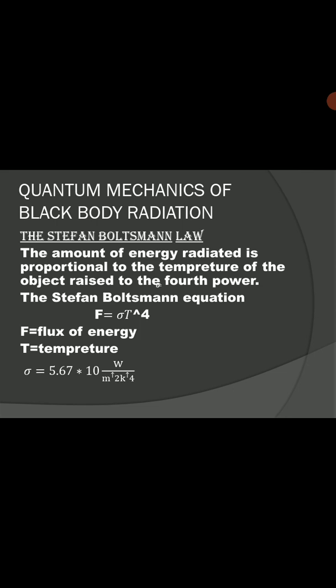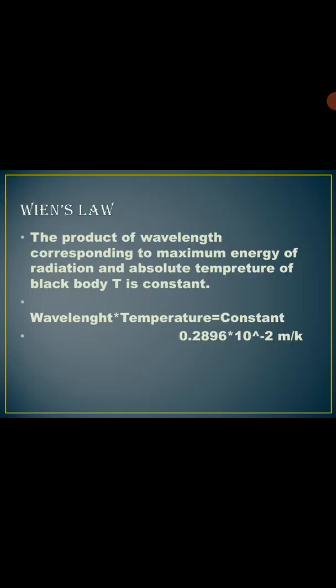Second is Wien's law. The product of wavelength corresponding to maximum energy of the radiation and absolute temperature of the black body T is constant. In mathematical expression, wavelength multiplied by temperature equals constant, and the value of that constant is 0.286 multiplied by 10 to the power minus 2 meter Kelvin.